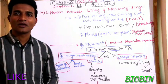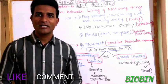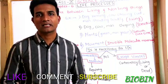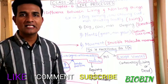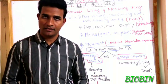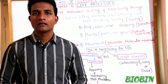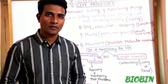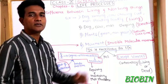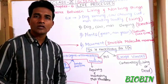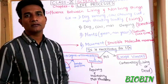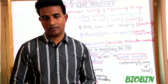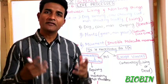Hi students, welcome to Bio Beam channel. Today we are going to discuss Class 10 CBSE Science Chapter 6: Life Processes. Let us first understand what are the important characters of living things.